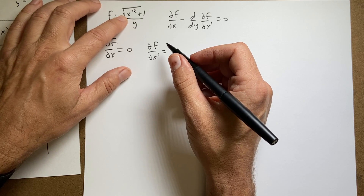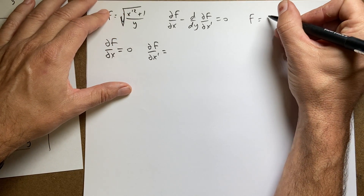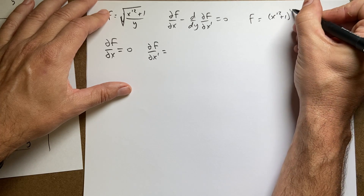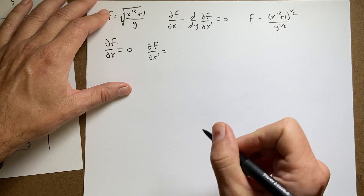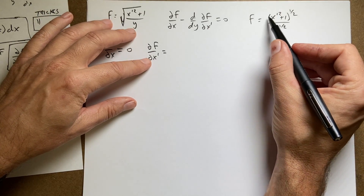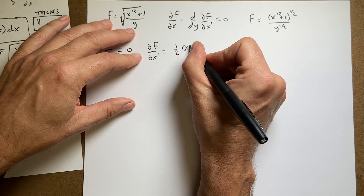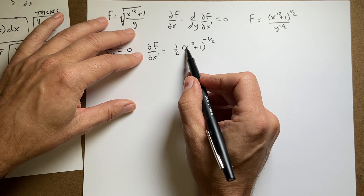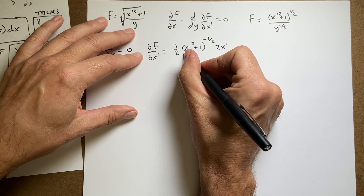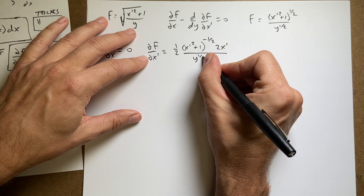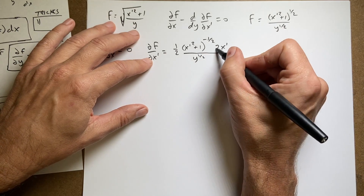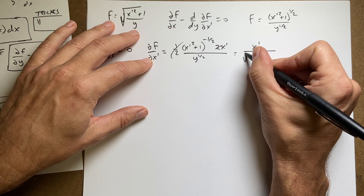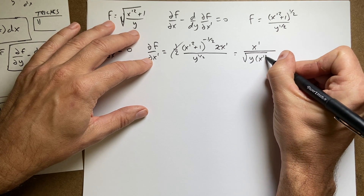The partial of f with respect to x: there is no x in f, so that's zero. Now I need the partial of f with respect to x′. Writing f as (x′² + 1)^(1/2) over y^(1/2), I apply the chain rule: one-half times (x′² + 1)^(−1/2) times 2x′, all over y^(1/2). The 2's cancel, giving x′ over the square root of y times (x′² + 1).